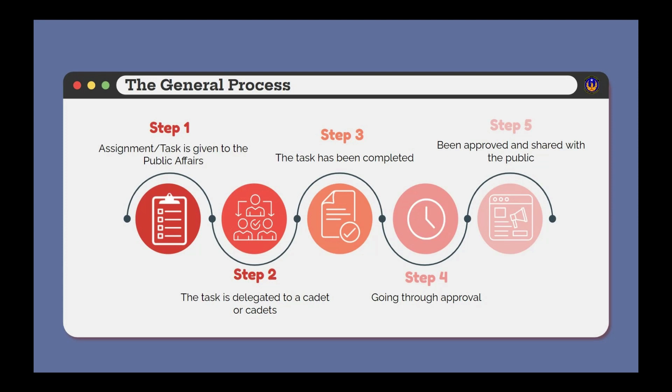When it comes to this team, there's a general process that we follow. Step one: once the assignment or task is given to the public affairs team — typically after a major event, activity, or even a weekly meeting — step two: the task is delegated to a cadet or a group of cadets to complete. Step three: once the task is complete, it goes through an approval process in step four. And finally, in step five, once the piece of media has been approved, it will be shared with the public. The main reason we go through this process is to make sure we uphold our image as Civil Air Patrol.